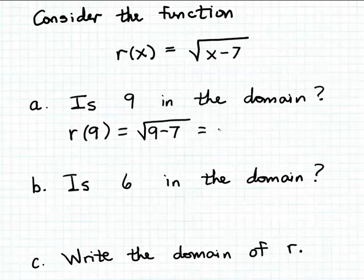So we get that r of 9 is the square root of 9 minus 7, and that simplifies to square root of 2. Now even though 2 is not a perfect square, square root of 2 is a real number. If you evaluate square root of 2 with your calculator, you'll see that it's approximately but not exactly equal to 1.41421.